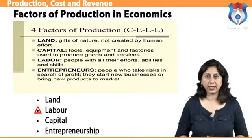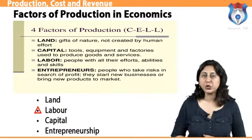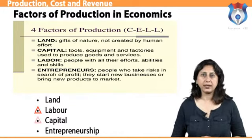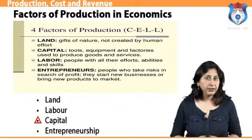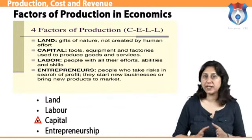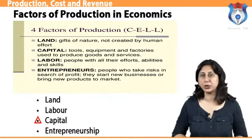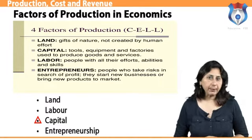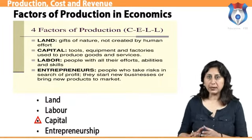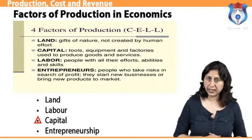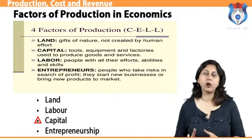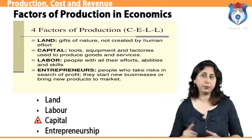Labor represents the human effort needed to transform physical resources into consumer products. Workers are usually compensated for their services through wages and salaries. Capital represents the monetary or physical items used to produce goods or services. Monetary capital represents the money companies use to purchase physical assets or pay workers for transforming assets into consumer products.